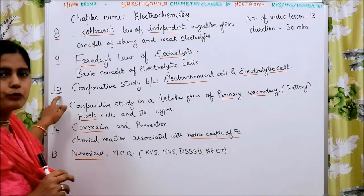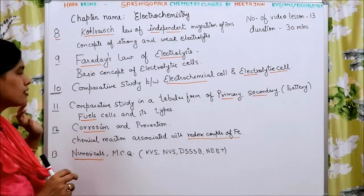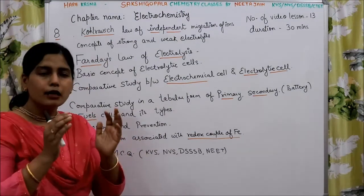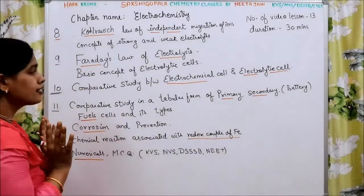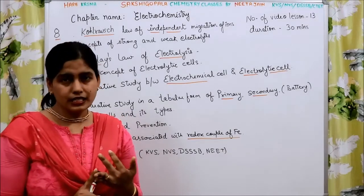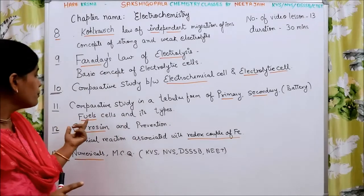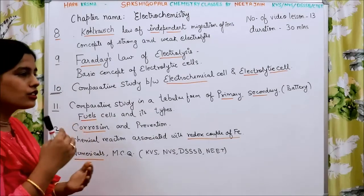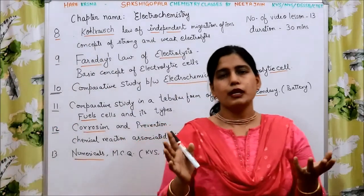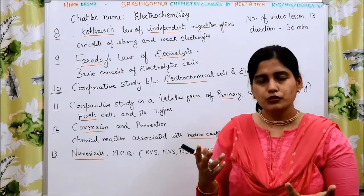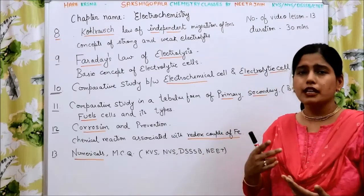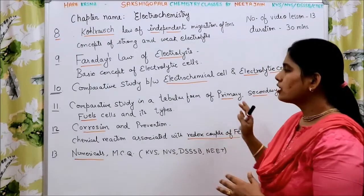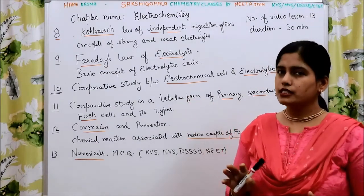Coming to module number 11, we will again do a comparative tabular study — this time between primary batteries, secondary batteries, and fuel cells with their types. We will cover the various reactions which occur in fuel cells, the properties of primary and secondary batteries, their anode and cathode compositions, and the chemical reactions that take place. All of this is covered in video lesson number 11.